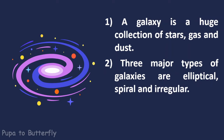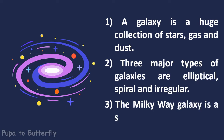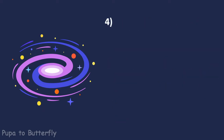Three major types of galaxies are elliptical, spiral, and irregular. The Milky Way galaxy is a spiral galaxy.